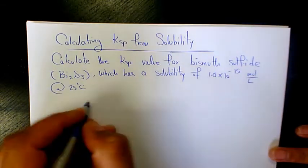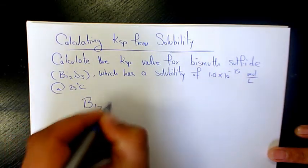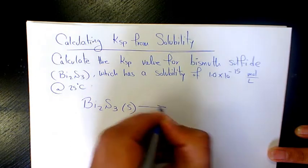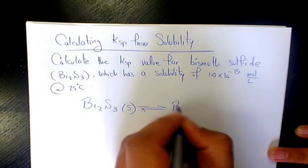If I write the reaction we have Bi2S3 in solid form. It dissolves and produces its ions.